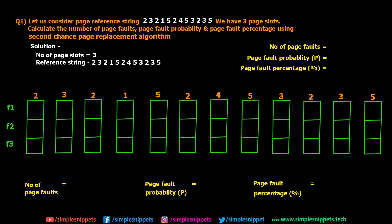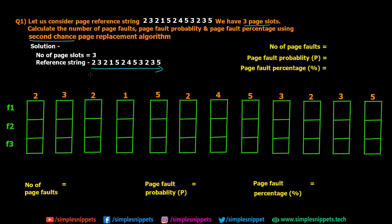Let us consider the page reference string 2, 3, 2, 1, 5, 2, 4, 5, 3, 2, 3, 5. We have three page slots, and we have to calculate the number of page faults, page fault probability, and page fault percentage using the second chance page replacement algorithm. We have frames F1, F2, and F3, and the reference string is basically the sequence of page requests coming in from left to right.